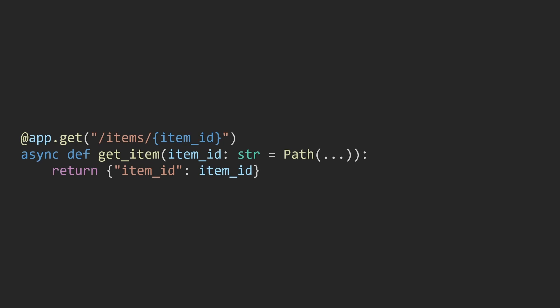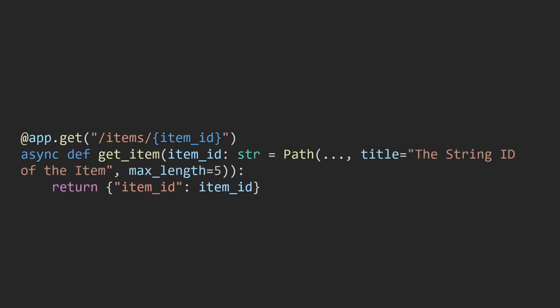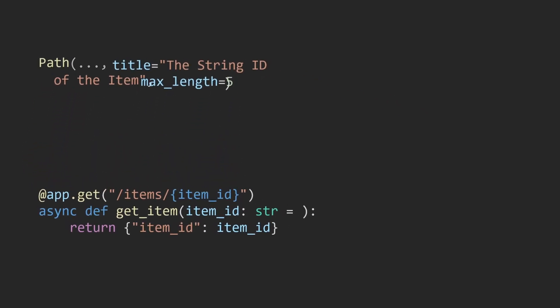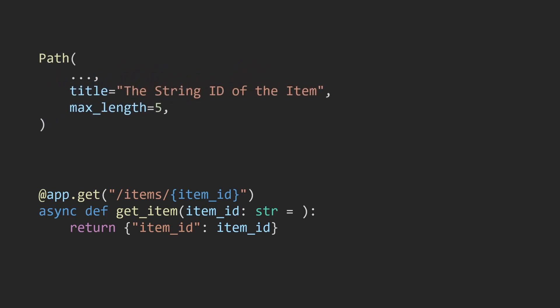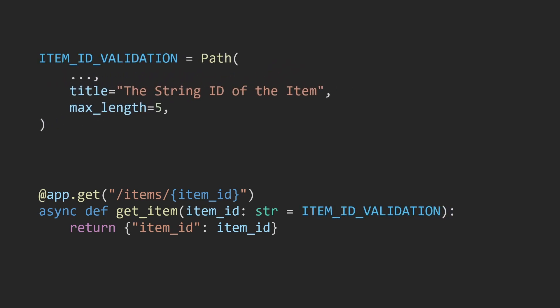Now let's put some of these validations to use. Looking at our items route where item_id is a string, we'll add string-specific validations — a title and a maximum length of 5 characters for our item_id, meaning we only accept 1 to 5 characters as valid path parameters. Since this is getting cluttered in our function, let's move the Path parameter out into a variable called item_id_validation and use that variable in our function. That looks much better. Let's check this out in the docs.